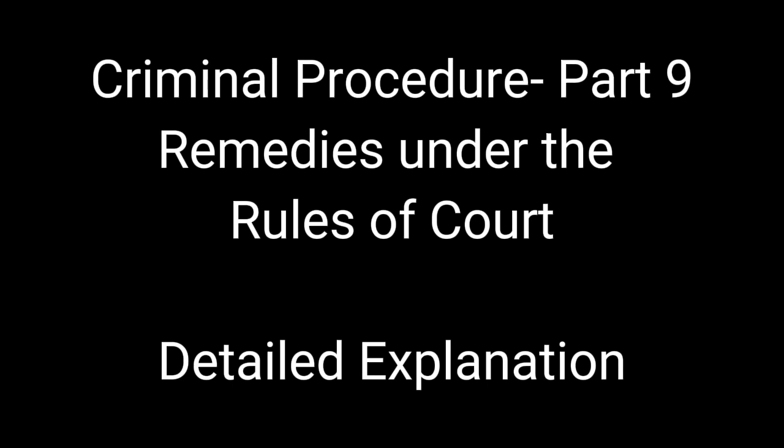In short, if the case is decided by the MTC, make an appeal under Rule 40 — notice of appeal — to the Regional Trial Court. The decision of the Regional Trial Court can then be reviewed by the Court of Appeals by filing a petition for review under Rule 42 within 15 days from the date of receipt of notice. What if the Regional Trial Court has original jurisdiction? If the RTC decides the case, make an appeal to the Court of Appeals under Rule 41 by filing a notice of appeal with the RTC.